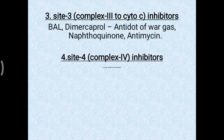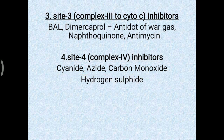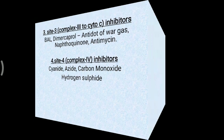Site 4 inhibitors of complex 4 are cyanide, azide, carbon monoxide, and hydrogen sulfide — remembered as HCC plus azide. So in summary, there are four sites: site 1 (complex 1), site 2 (complex 2 to coenzyme Q), site 3 (complex 3 to cytochrome C), and site 4 (complex 4), each with their specific inhibitors.